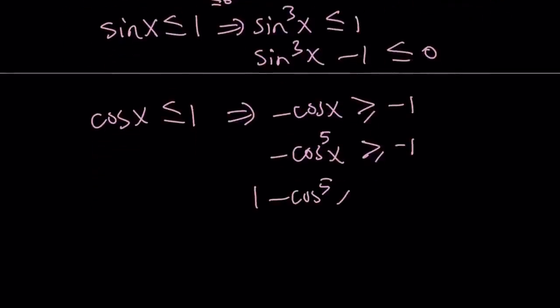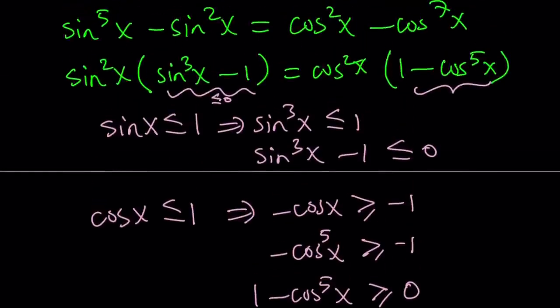one minus cosine x to the fifth is going to be greater than or equal to zero. We're adding one. Okay? So, this is the other thing we got. It means this is always greater or equal to zero. And sine squared and cosine squared obviously cannot be negative. So, they're not really going to impact anything. But notice that we have a weird situation. If one side is negative, the other side is positive, then it's kind of problematic, right? So, they both have to be zero.